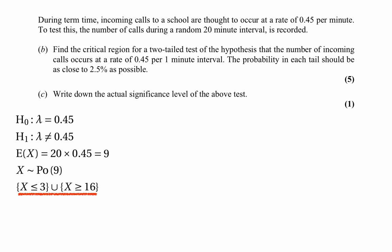The other part of the question asks us to write down the actual significance level of our test. We add together the two tail probabilities: P(X ≤ 3) plus P(X ≥ 16), which is 0.0212 plus (1 − 0.9780). That gives 0.0432, which is 4.32%. So that's the actual significance level of our test.